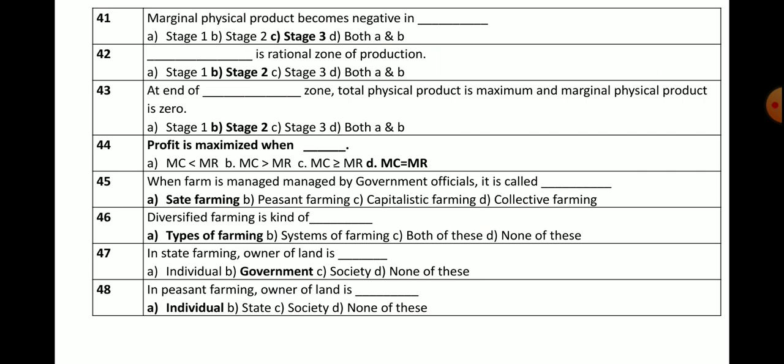Question number 42: Which is the rational zone of production? As we know, stage 1 and stage 3 are the irrational zones. So the correct option is stage 2 — zone 2 is the rational zone of production.